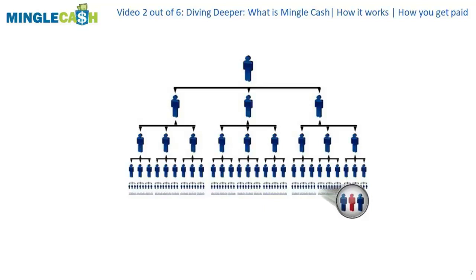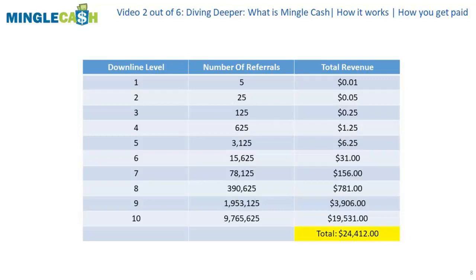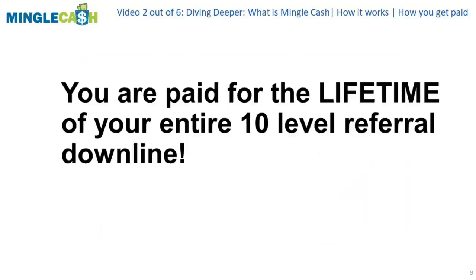If you and every other person in your ten-level downline refers just five people — which is super easy — you'll be earning money every day on over 9.7 million users. Every single time these 9.7 million users view an ad, you get a piece of the pie. This is the power of the ten-level referral system and why Mingle Cash's affiliate program is so lucrative.